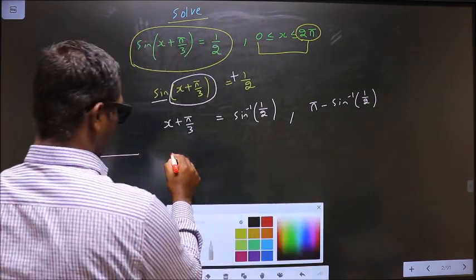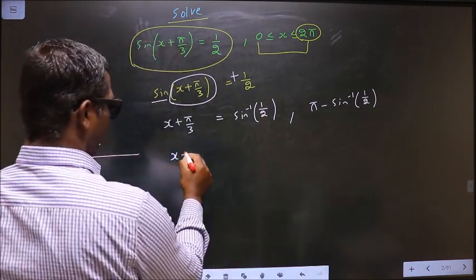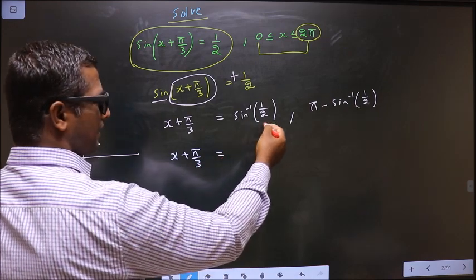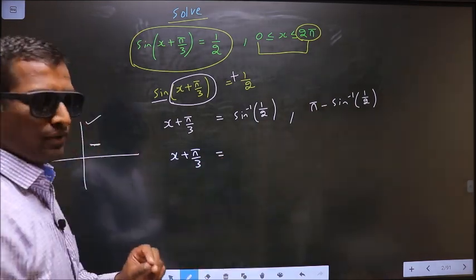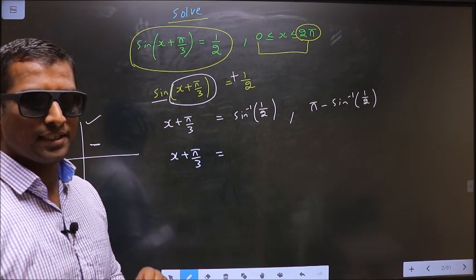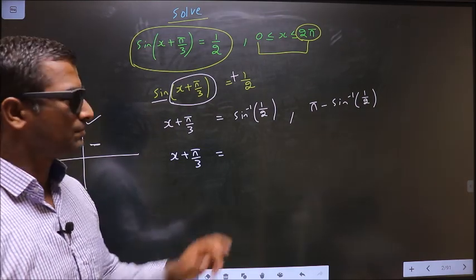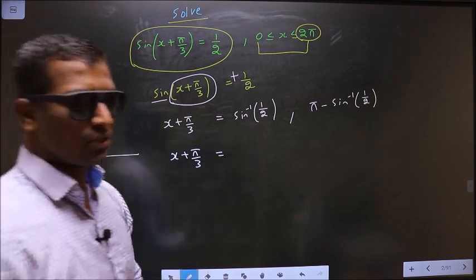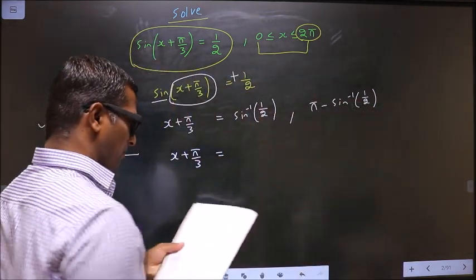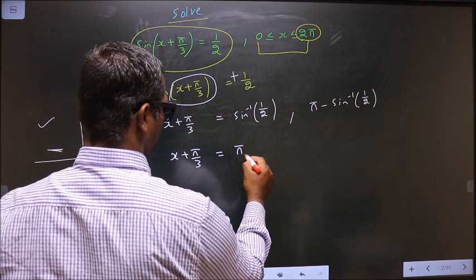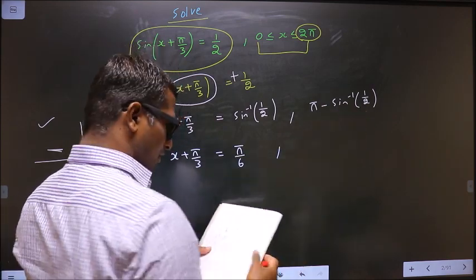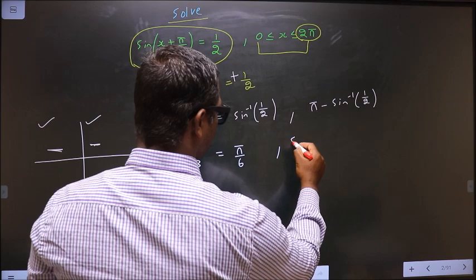Now calculate x + π/3. Before you calculate, make sure your calculator is in radians mode. For the first quadrant value, sin⁻¹(1/2) gives π/6. For the second quadrant value, π minus sin⁻¹(1/2) gives 5π/6.